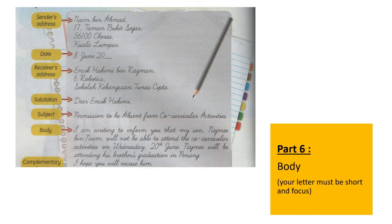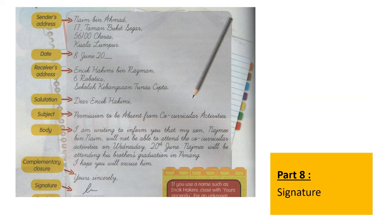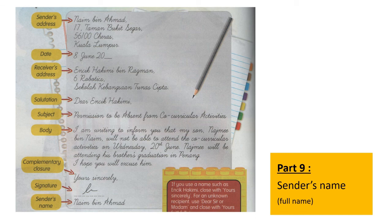Part 6 is the body of the letter. Your written letter must be short and focused. Part 7 is the complementary closure. If you know the receiver, it is advisable to write 'Yours sincerely.' If you don't know the receiver, it is advisable to write 'Yours faithfully.' Part 8 is the signature — don't forget to sign there. Part 9 is the sender's name — make sure you write your full name.